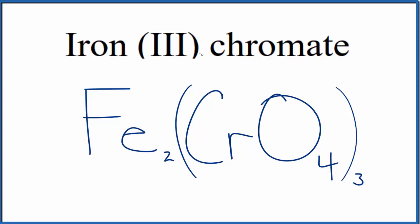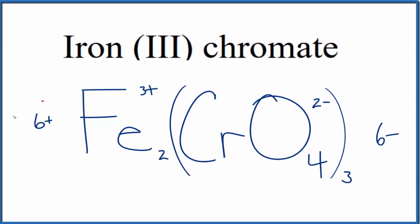But let's check our work. We said iron was 3+, and the whole chromate ion here is 2-. Three times 2- is 6-, and two times 3+ is 6+. So these balance out, giving us a net charge of zero.